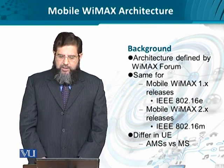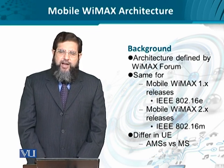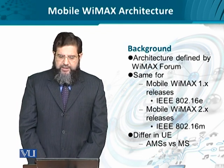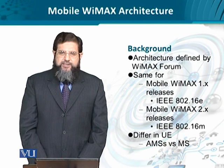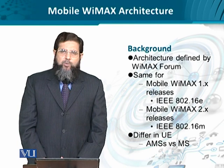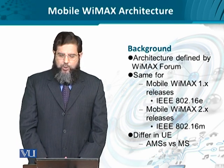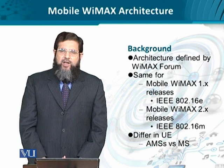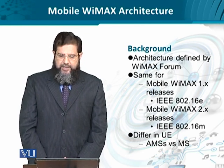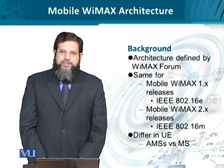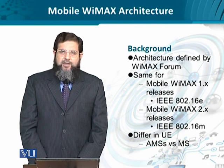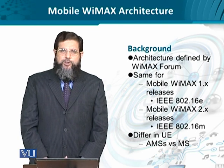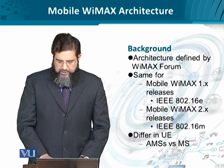The architecture for mobile WiMAX release 1.0 and 1.x — meaning variants like 1.1 and so forth — and mobile WiMAX 2.x is essentially the same. The only difference is that mobile WiMAX 1 is based on IEEE 802.16e, and version 2 is based on 802.16m. This translates into a change in the physical and data link layers of the mobile stations as well as the network elements. In the earlier version it was the mobile station; in the more advanced 2.0 mobile WiMAX, it is advanced mobile stations.